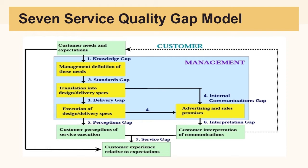This is a diagram of what the model actually looks like. In the center of the model, in the yellow squares, you will see management's role or responsibility within the model. On the outer parts, in the blue rectangles, you will see the customer's role. The model starts with the customer's needs and expectations, which transitions to management's definition of those needs, which then translates into the design and delivery specification.